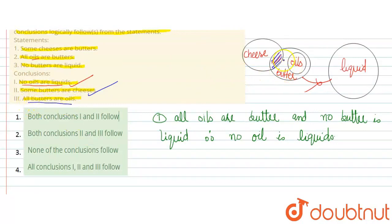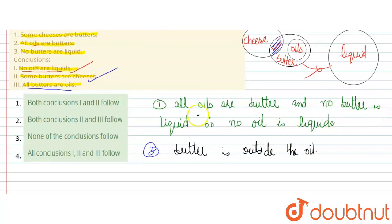All butters are oil - are all butters oil? Let's see the third conclusion. The butter is outside. Butter is outside the oil. If butter is outside oil, that means not all butters are oil. They could be, but they're not necessarily. So the first and second conclusions follow.